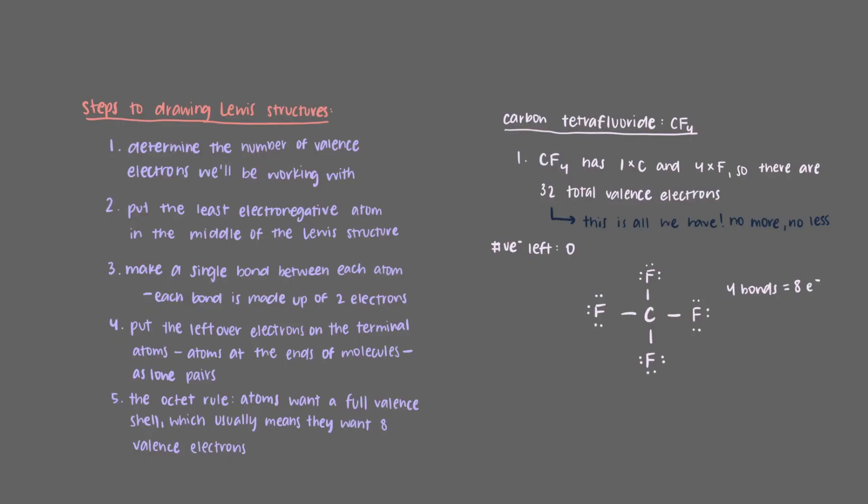So as we add the electrons as lone pairs around the fluorines, the number of available electrons goes down. Once we finish adding all of the lone electron pairs, we see that we don't have any more leftover electrons.